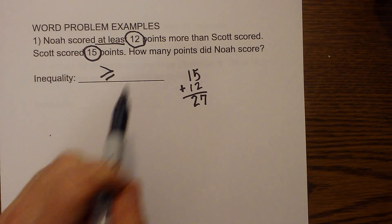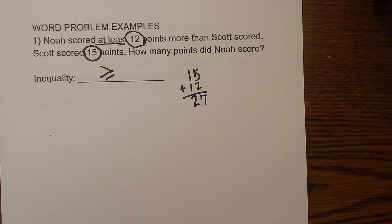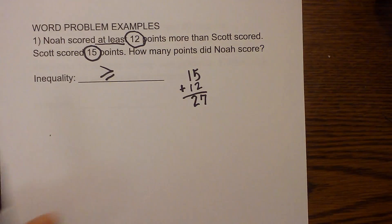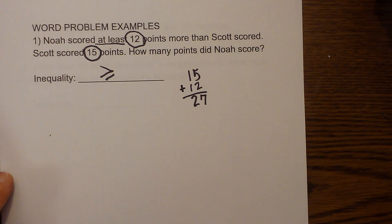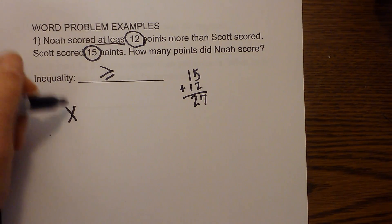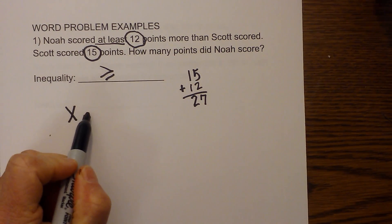So you want to know how many points did Noah score. Noah scored at least 12 more than Scott, so there's some wiggle room there. Next, we're going to write an x first and then write the inverse operation, which is subtraction.